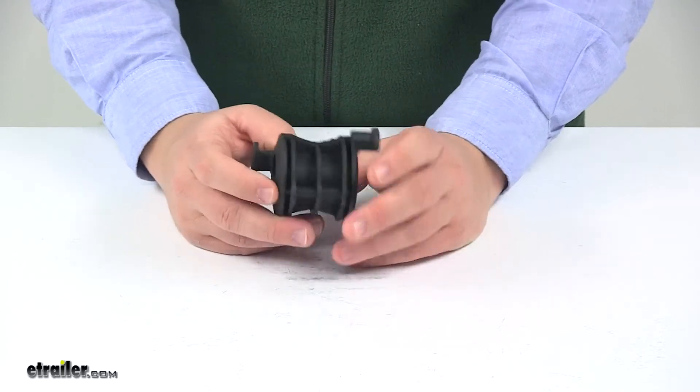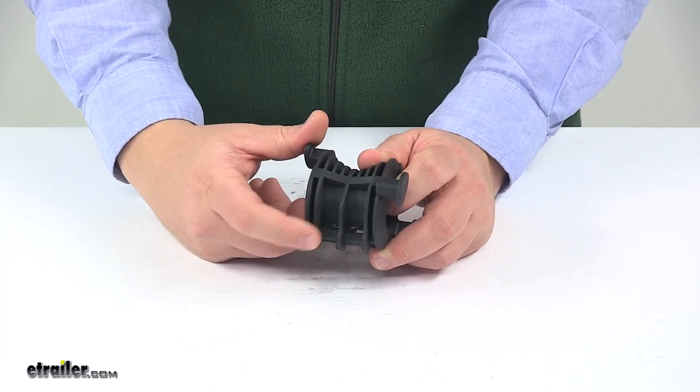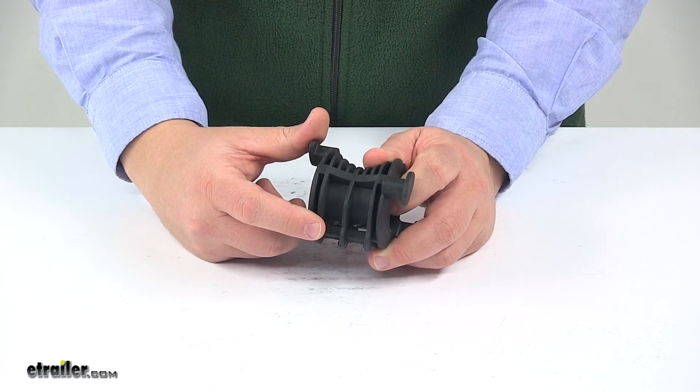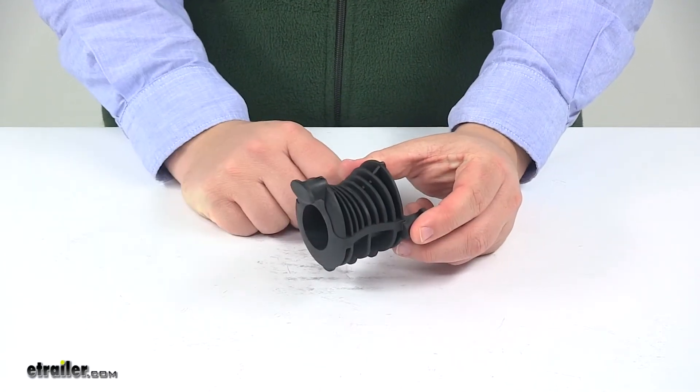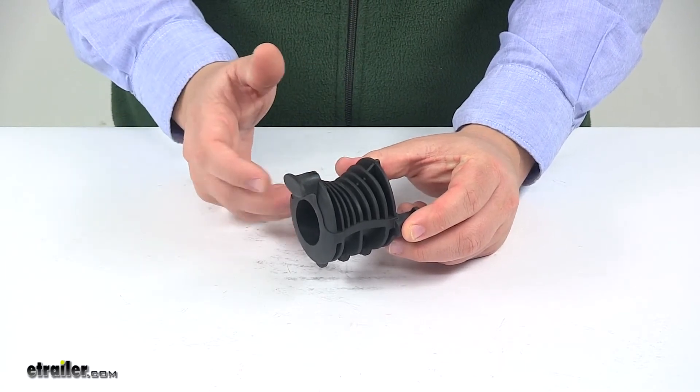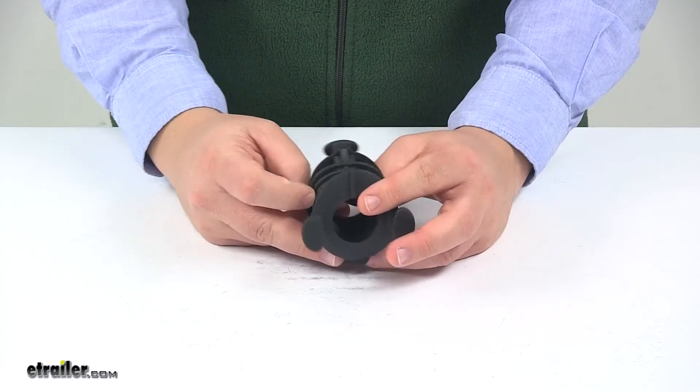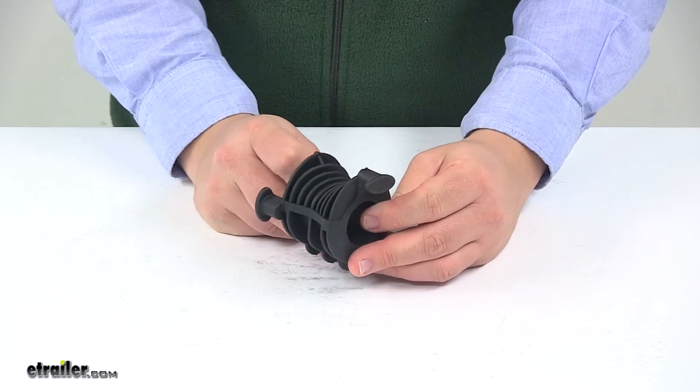It's also constructed so that it's ready to work with an anti-sway cage attachment as well as rubber straps to hold your bike securely in place to the bike rack. Those items are sold separately. If you need replacements of those, you can find them at eTrailer.com.